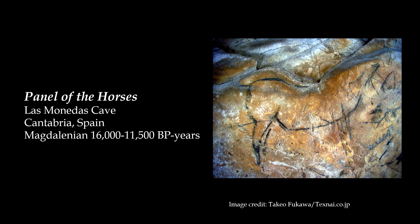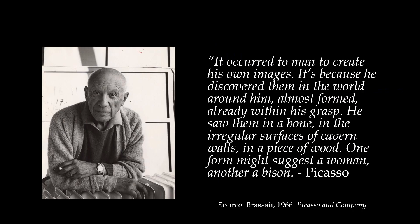On a panel deep within the Las Monetas Cave, there is a horse whose back dips along the natural contour of the wall and has lines marked with charcoal. What is most striking about this horse, presumably a pregnant mare, is that she is without a head. One could suggest that the Ice Age artist chose a unique place in the cave for the sunken back of this horse, but that didn't allow space for a head. The perspective of first finding the place for the art was held by Picasso, who said it occurred to man to create his own images because he discovered them in the world around him, almost formed, already within his grasp.